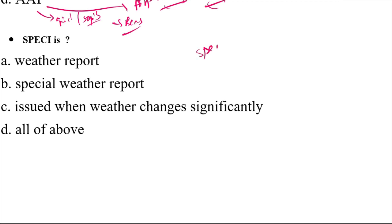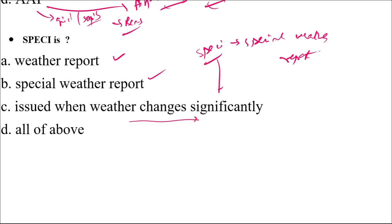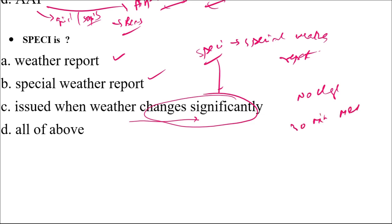SPECI is a special weather report. It is issued when weather changes significantly — that is the key term. Whereas if there is no significant change in weather for normally 30 minutes, the METAR is issued. So the correct answer is all of the above.